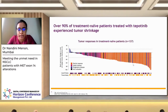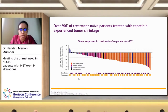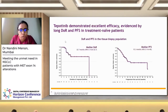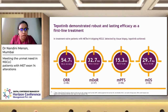Targeting MET exon 14 skip mutations with tepotinib showed excellent tumor responses. The waterfall plot for treatment-naive patients shows over 90% had tumor shrinkage, with the orange bars indicating partial responses, while a smaller group had stable disease. Not only was the response rate good, but the duration of response was 32 months in the newly diagnosed or treatment-naive population, with a median PFS of 15.3 months — demonstrating robust and lasting responses in the first-line setting.